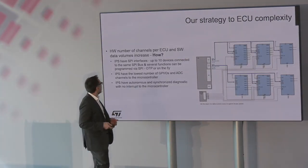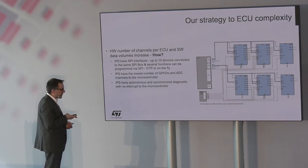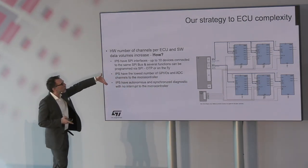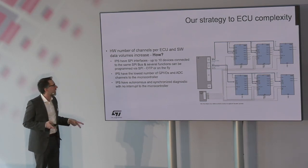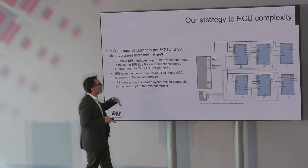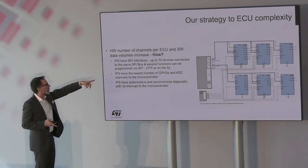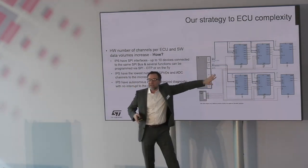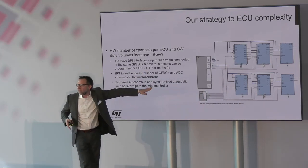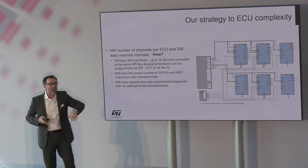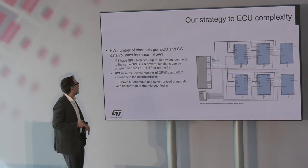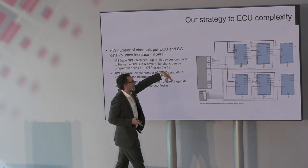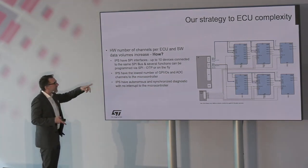Starting from the first challenge: different devices share the SPI bus, with many channels managed by only two SPI buses. These interact with the microcontroller to save resources — up to 10 devices connected to SPI. These are high-speed, low-voltage, multi-channel drivers, from 20 to 50 channels in theory, driving one ECU with only two SPI buses. IPS will save microcontroller IOs and reduce the number of GPIOs and even the ADC.